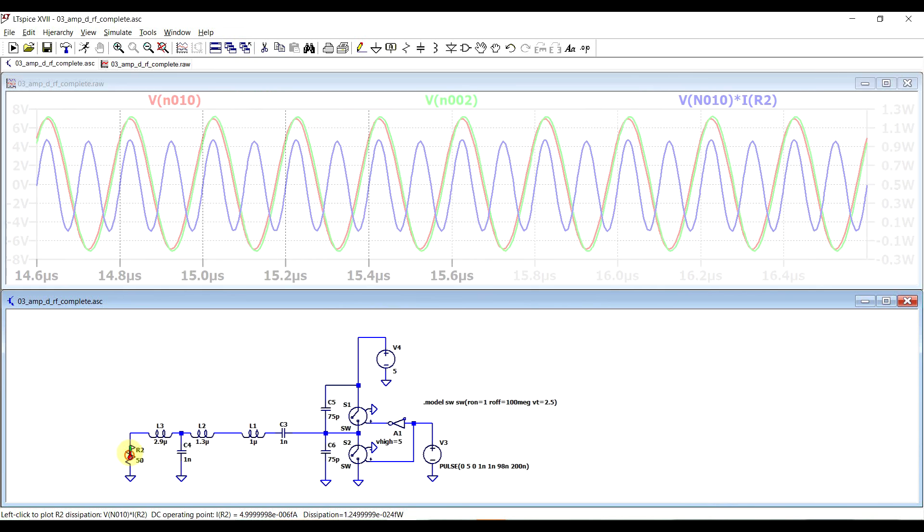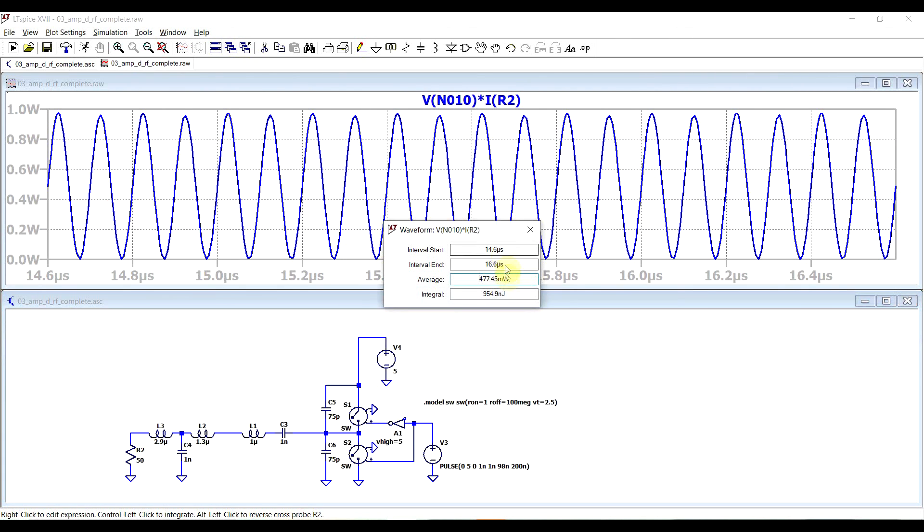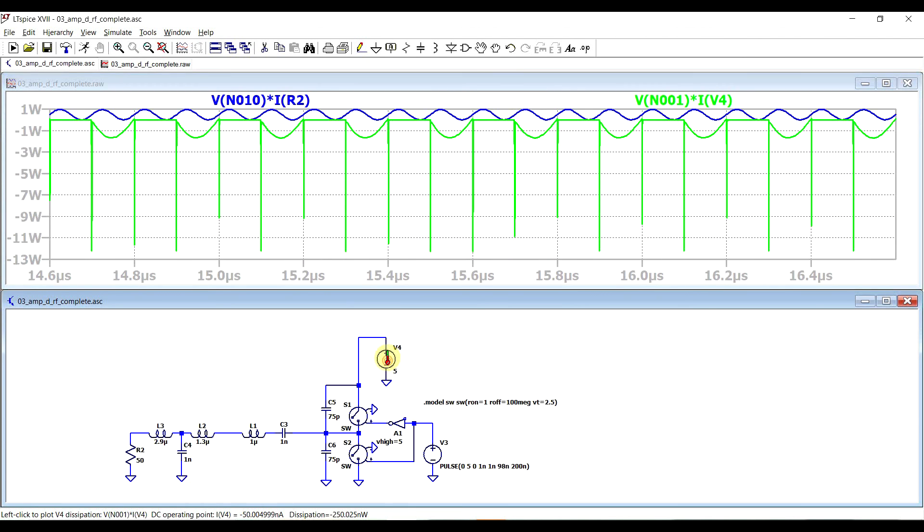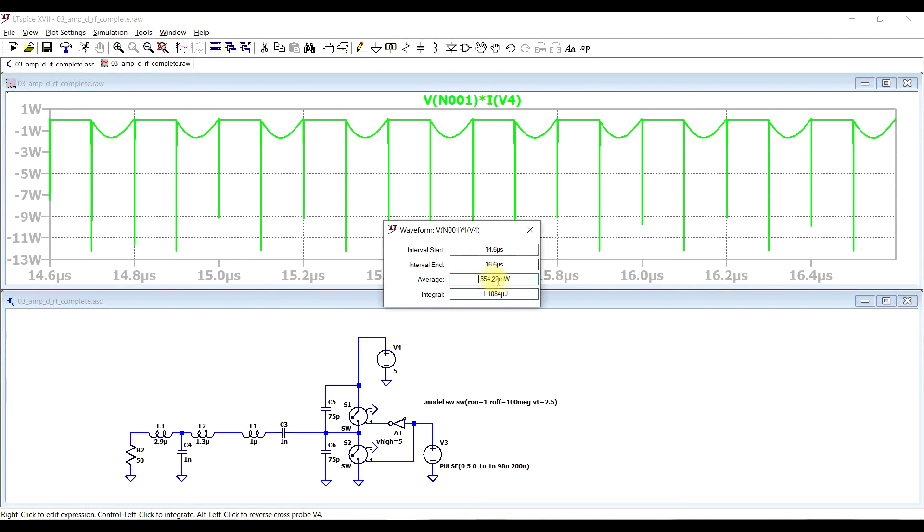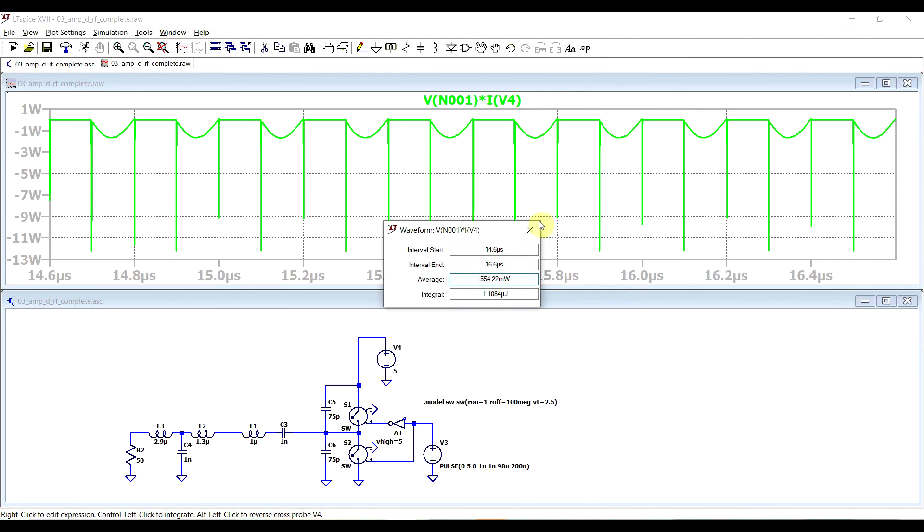So now we can look at efficiency. We can see that on the output we have about 477 milliwatts, and on the input, again if we integrate this, we have about 554 milliwatts. So this is giving us about 86.1 percent of efficiency. So very close to what we're getting in the calculations. So we seem to be on the right track.